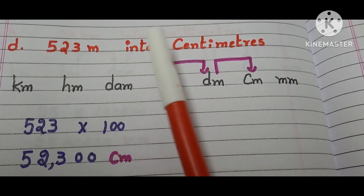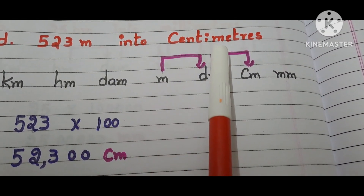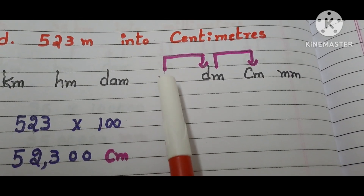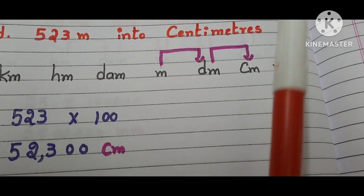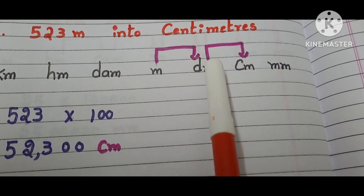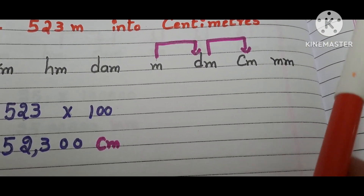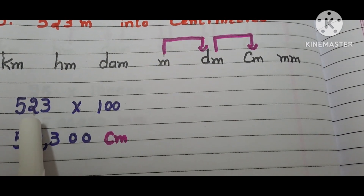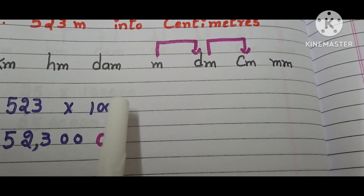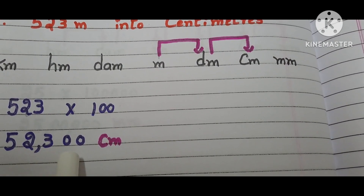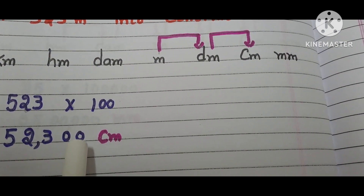Part (d) is 523 meters into centimeters. The question is given in meters and we have to convert them into centimeters. Where are meters in the table? Here. And where are centimeters? Here. We move 2 steps to the right, so we multiply by 100. 523 times 100 is 52,300. The answer is 52,300 centimeters.